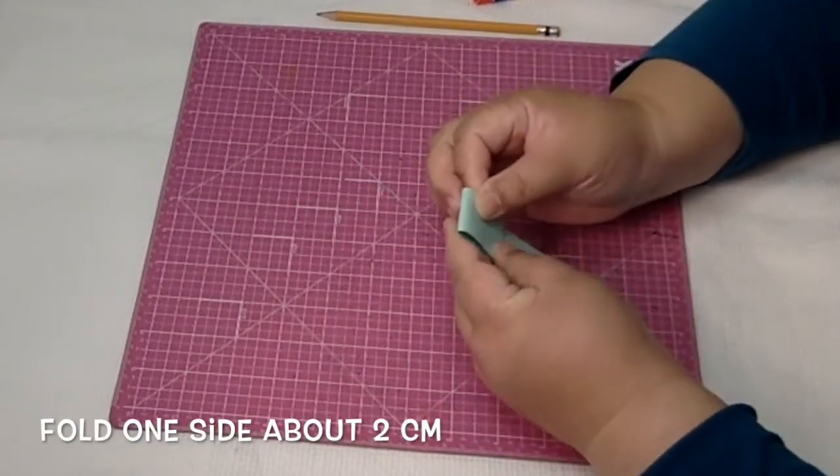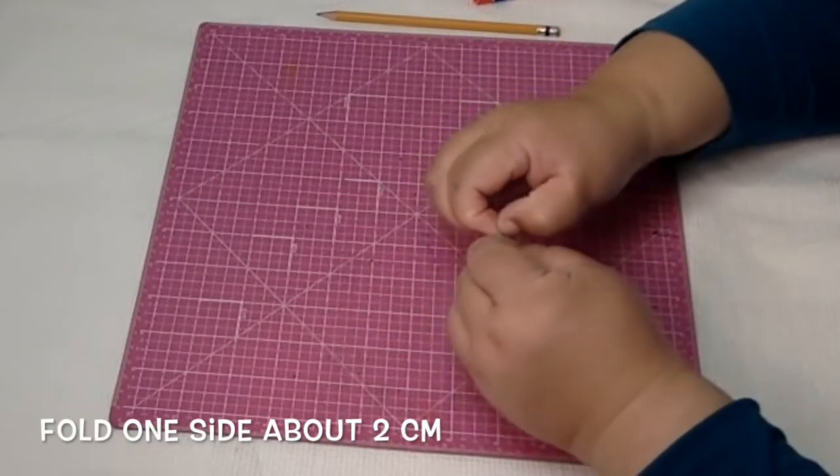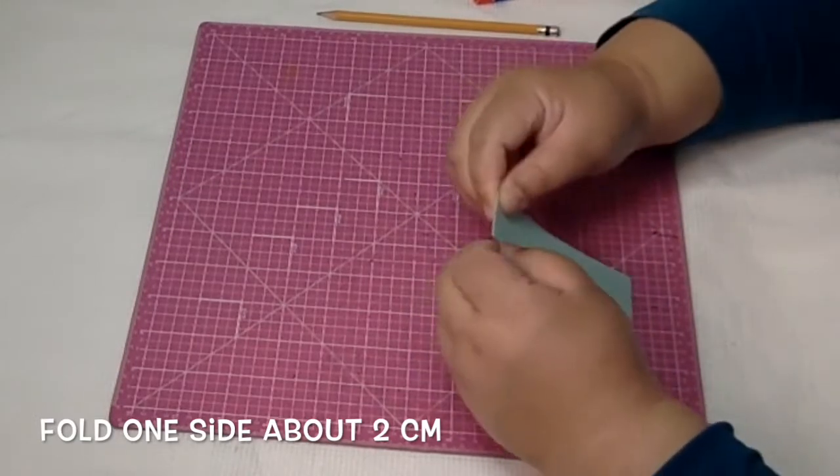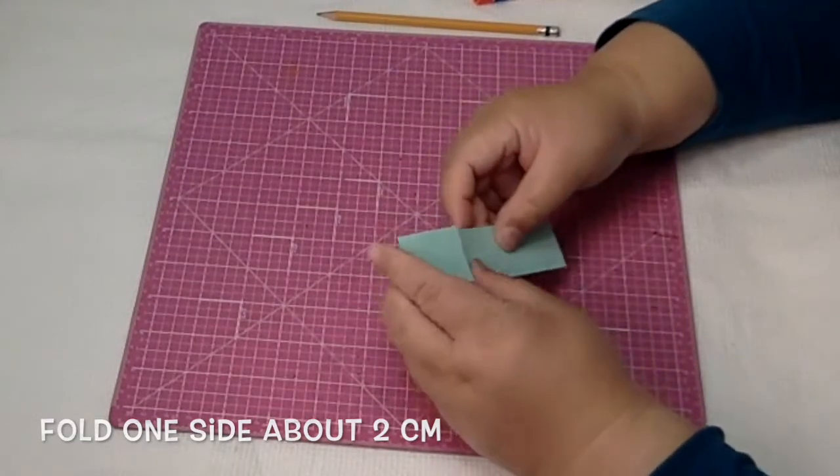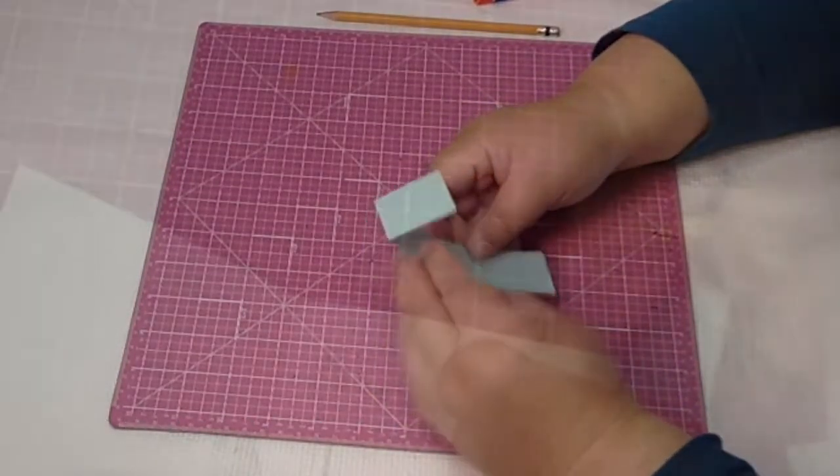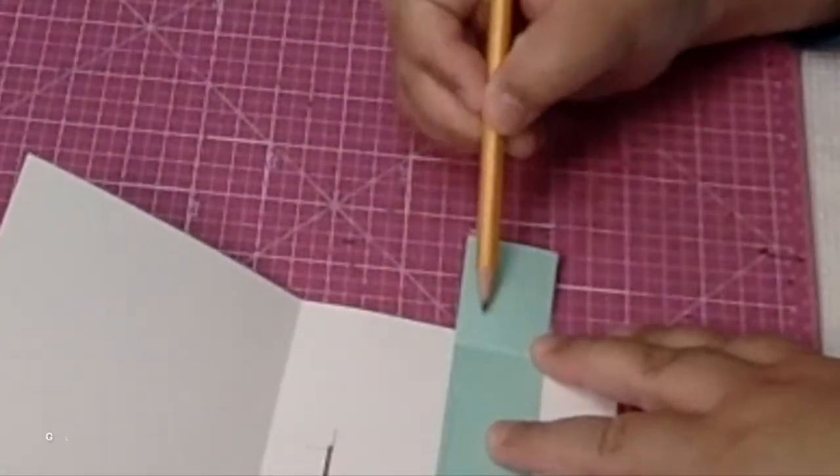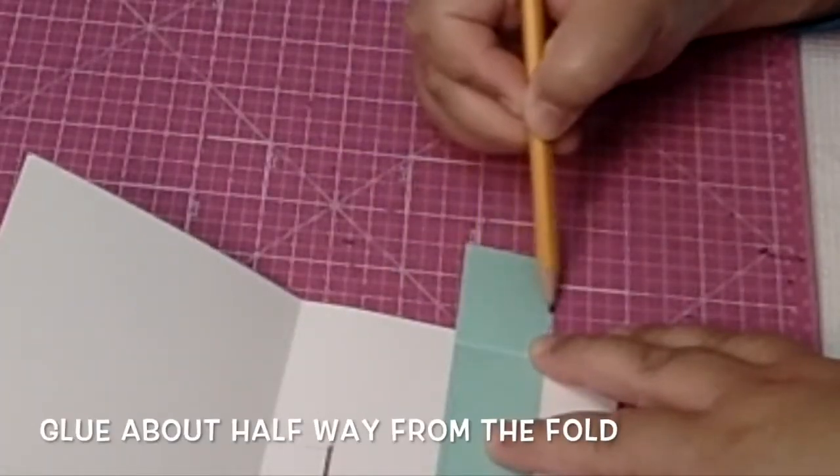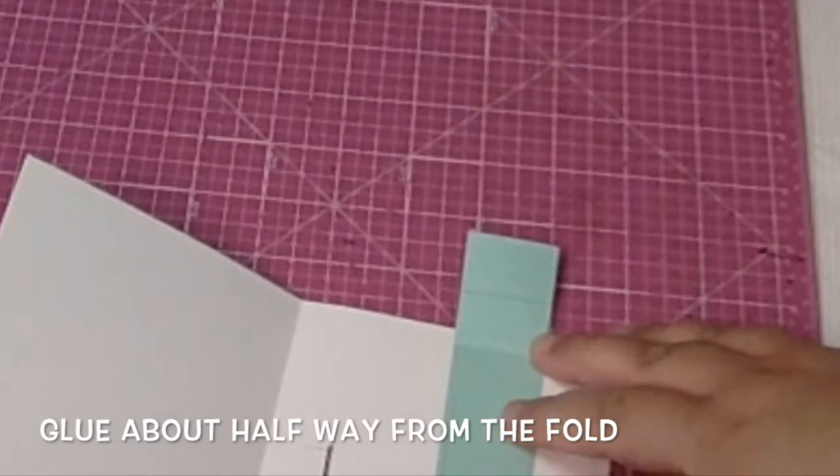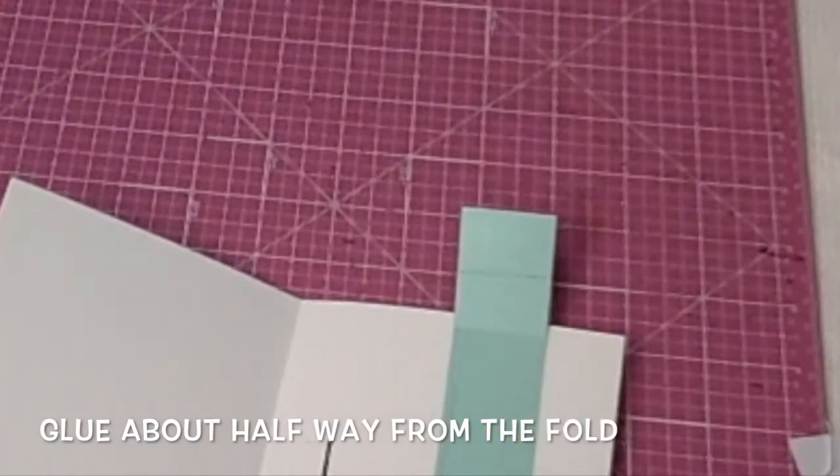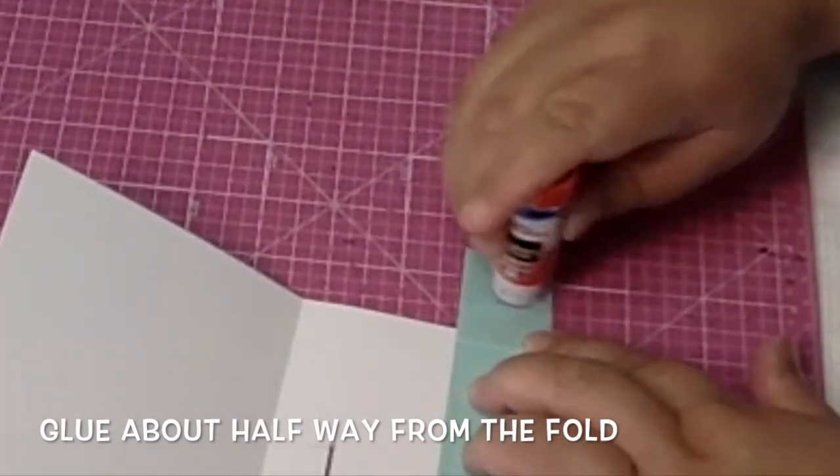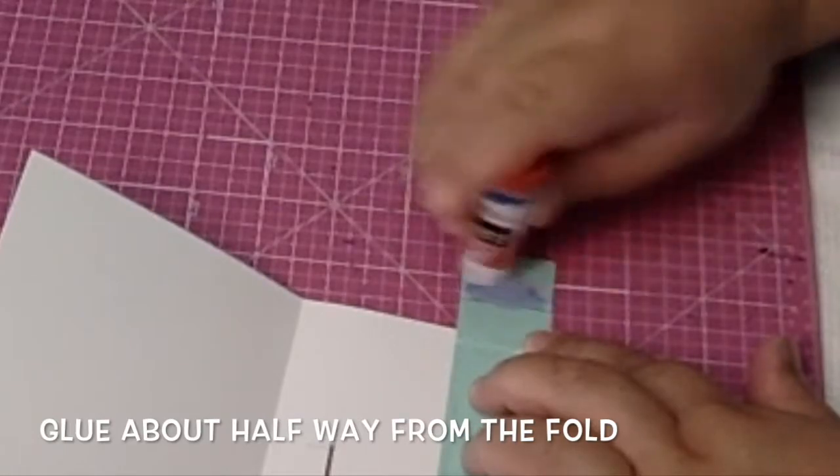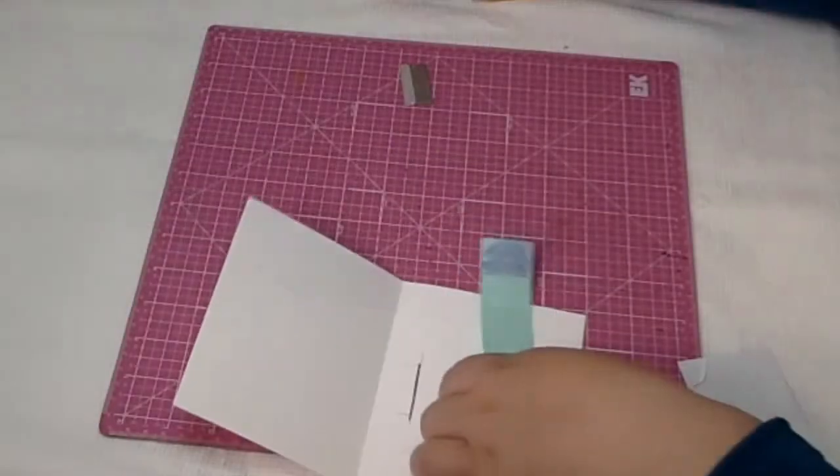Okay, so you take the cardstock, fold over one side from the edge about two centimeters in like this, and then about halfway from that fold line to the edge I'm gonna mark it with pencil. But basically all you have to do is place glue from that halfway point to the edge.